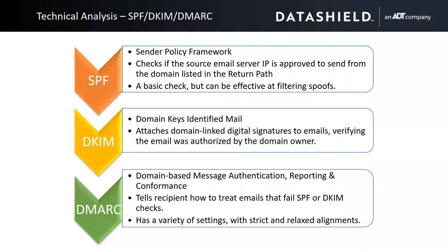Before we get too far into it, I want to discuss a few of the frameworks that are out there — mechanisms we use to detect and identify malicious emails. This is all done automatically, and some of these are quite old but have evolved and built on each other over time. The first one is the Sender Policy Framework, or SPF. SPF is a way to check and see if an IP is approved to send from the domain it says it's sending from. You can have a hard fail or a soft fail alignment. If the IP does not fall within the approved sender list for a domain, it will fail. The soft fail will let it send, but it will create an error.